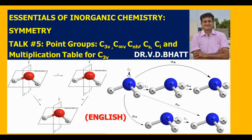Welcome to the essentials of inorganic chemistry. I am your friend Dr. V.D. Bhatt and presently I am discussing a chapter on symmetry. This is the fifth talk in the series, in continuation of the previous four talks. If you are new, I request you to go back and attend the first four talks. Today I intend to discuss a few point groups like C3V, C-infinite-V, CNH, CS, and CI point groups, and I will begin with the multiplication table for C3V point group.